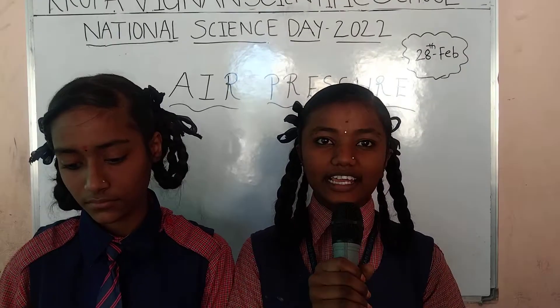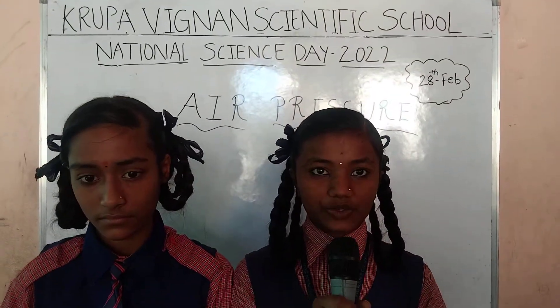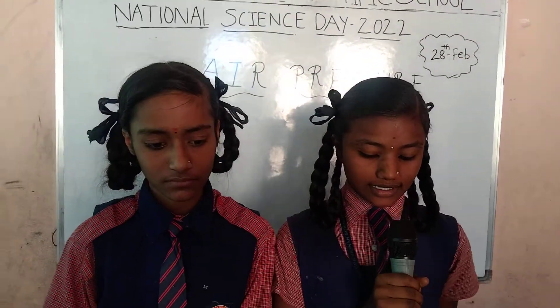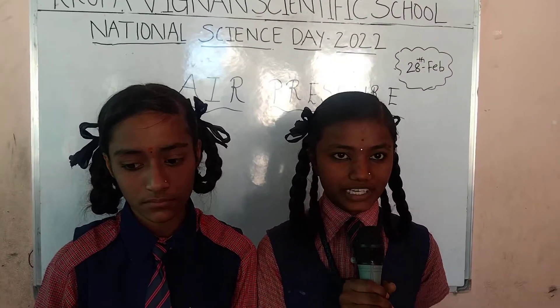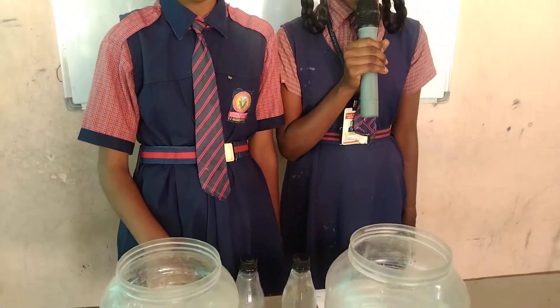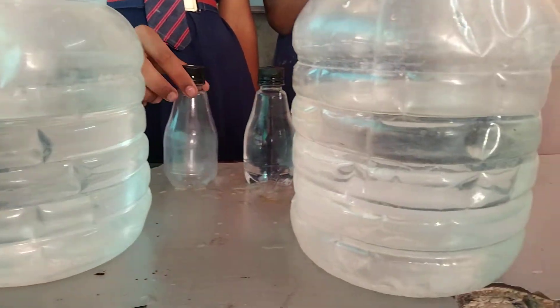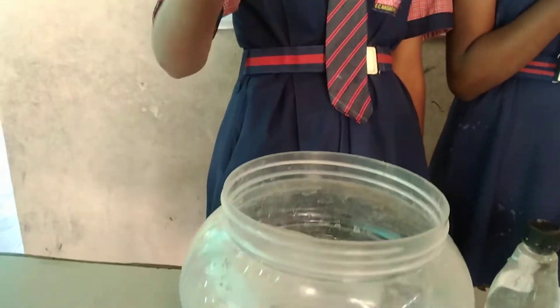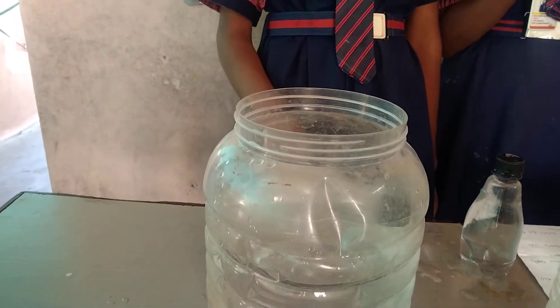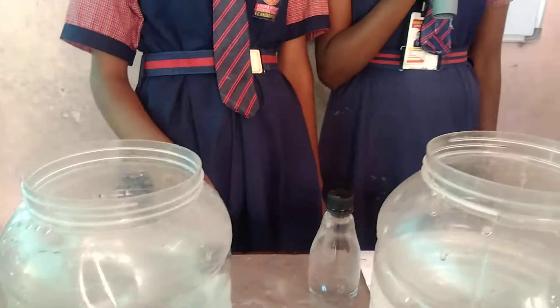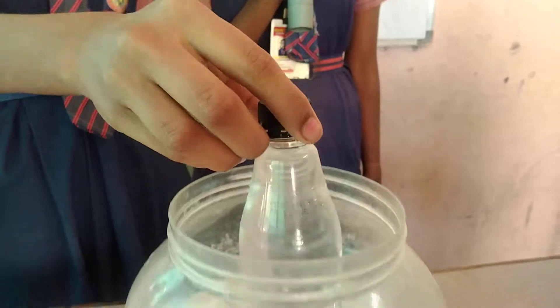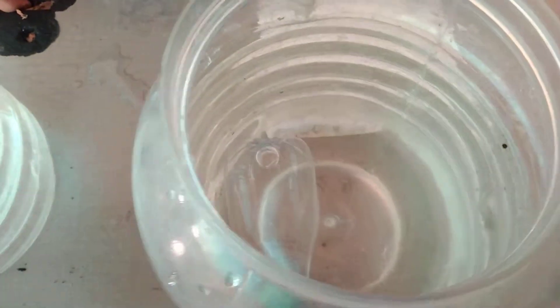Good afternoon everyone. Today is 28th February and we are celebrating National Science Day in our school. My name is Laxmi. She is my co-partner. I am studying in seventh class. First, we take two empty jars filled with water. If we put one empty bottle into the jar it will float. When we put another bottle filled in, it sinks to the bottom. This shows that air occupies the space around us.